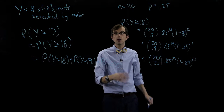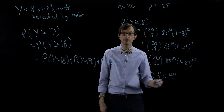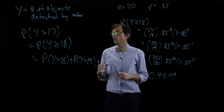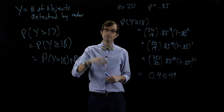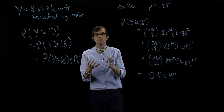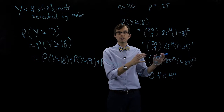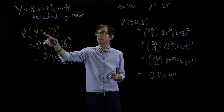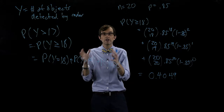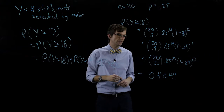We could do this easily in Excel. If we do that, we get that the probability is point four zero four nine. So given twenty total objects, the probability that we detect more than seventeen is point four zero four nine — about forty percent. That is, forty percent of different allotments of twenty objects will detect more than seventeen objects.